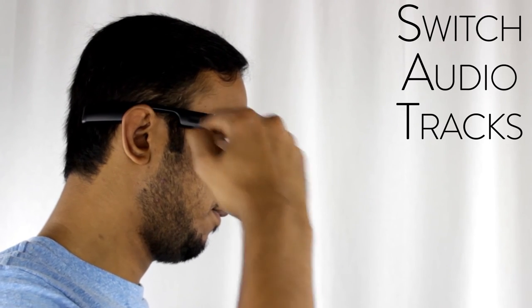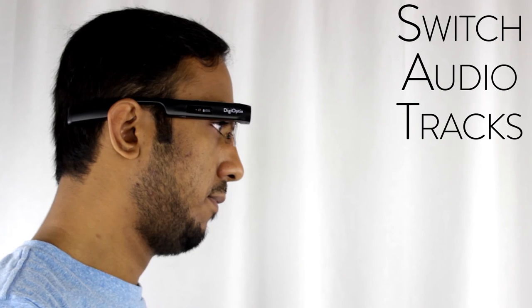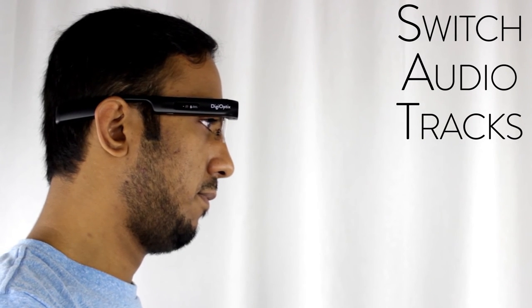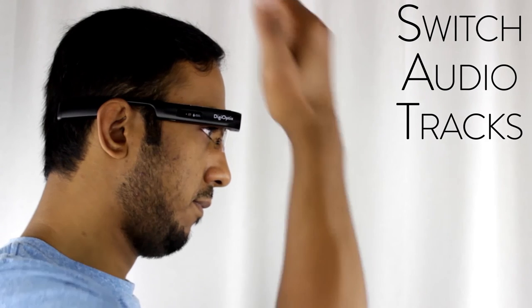To switch songs, use your hand to push up next to the sensor for the next audio track. Use a pull down swipe motion to switch to the previous audio track.